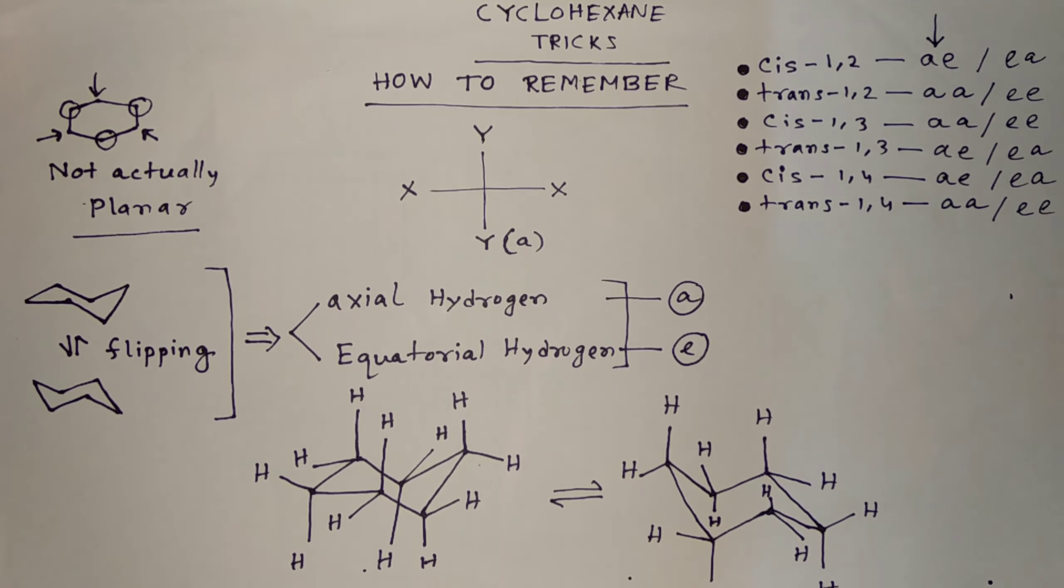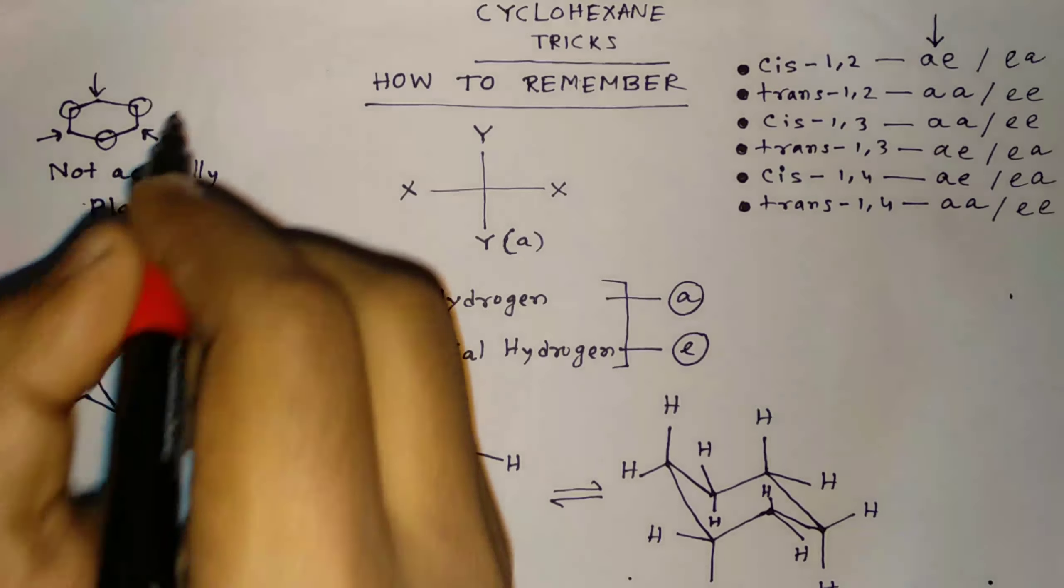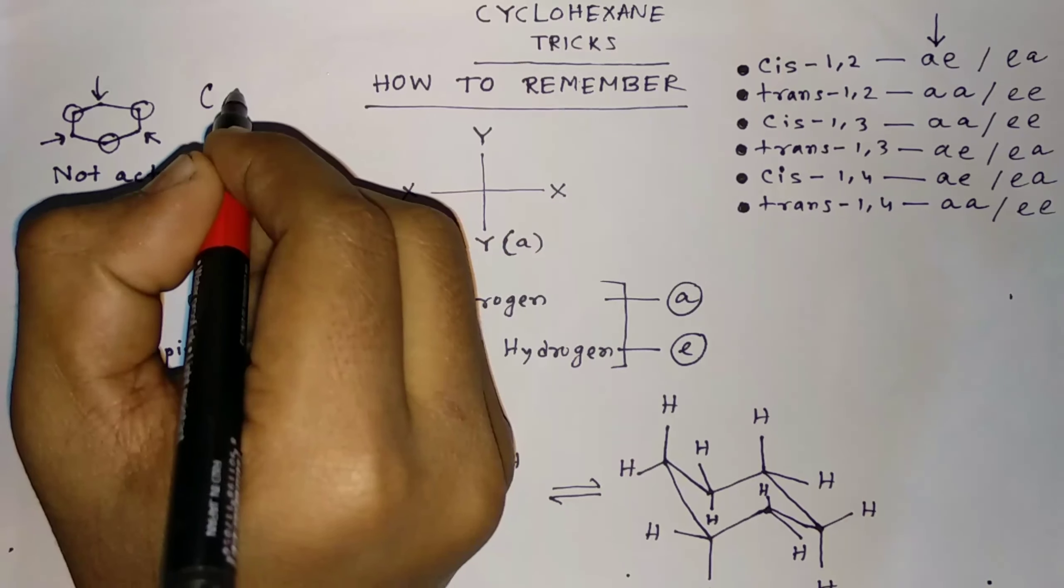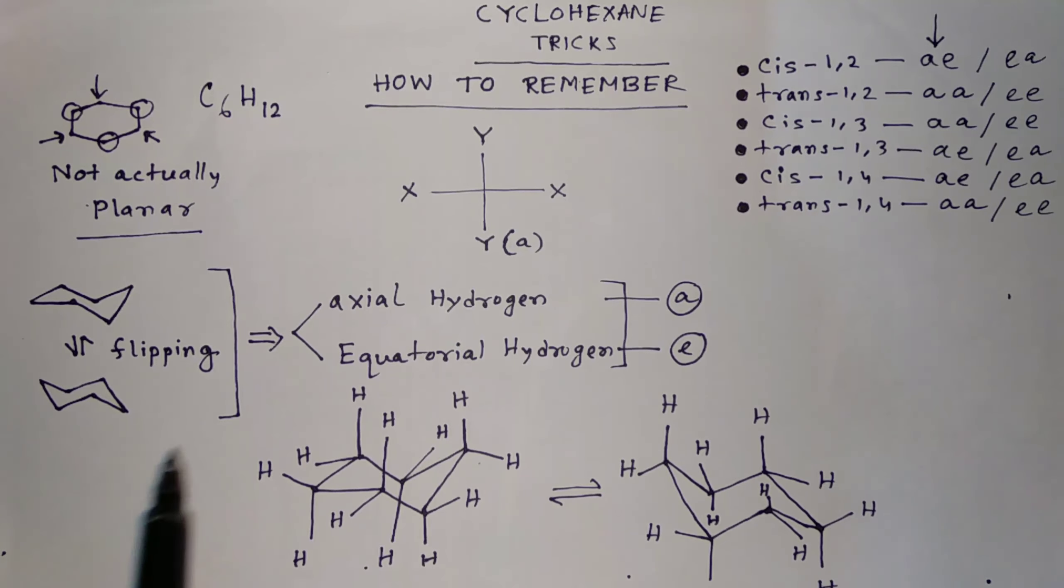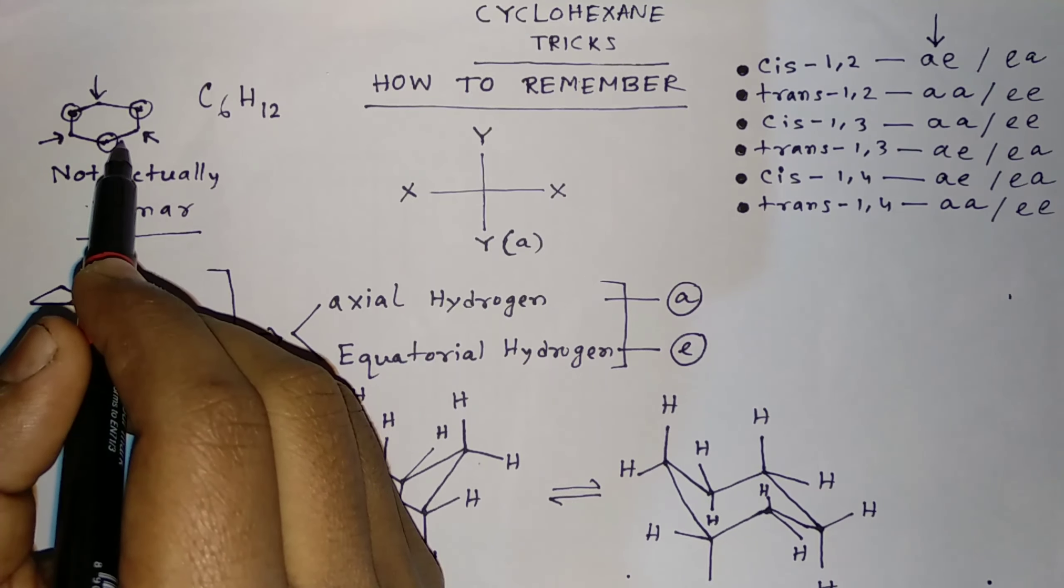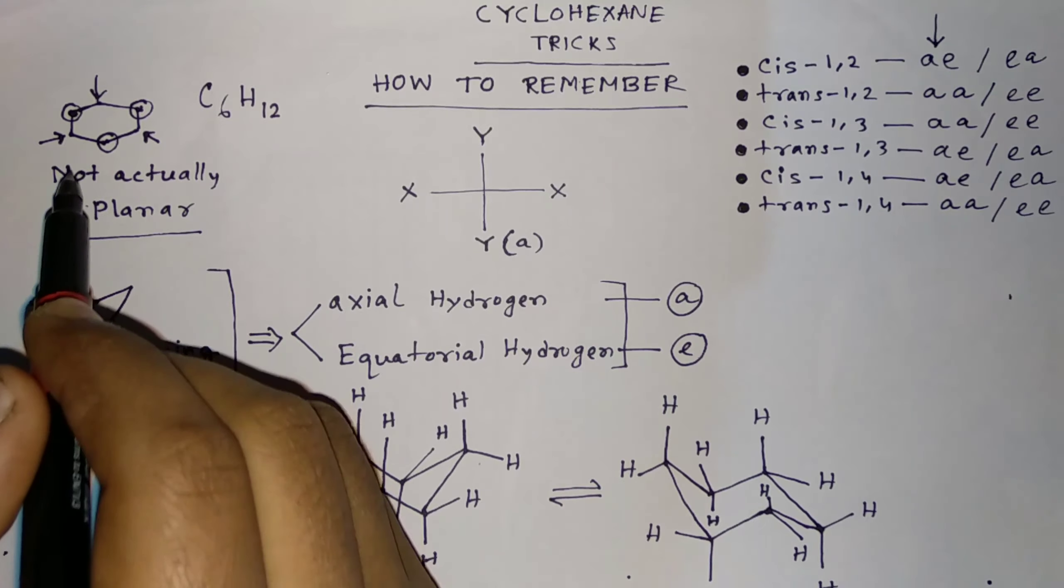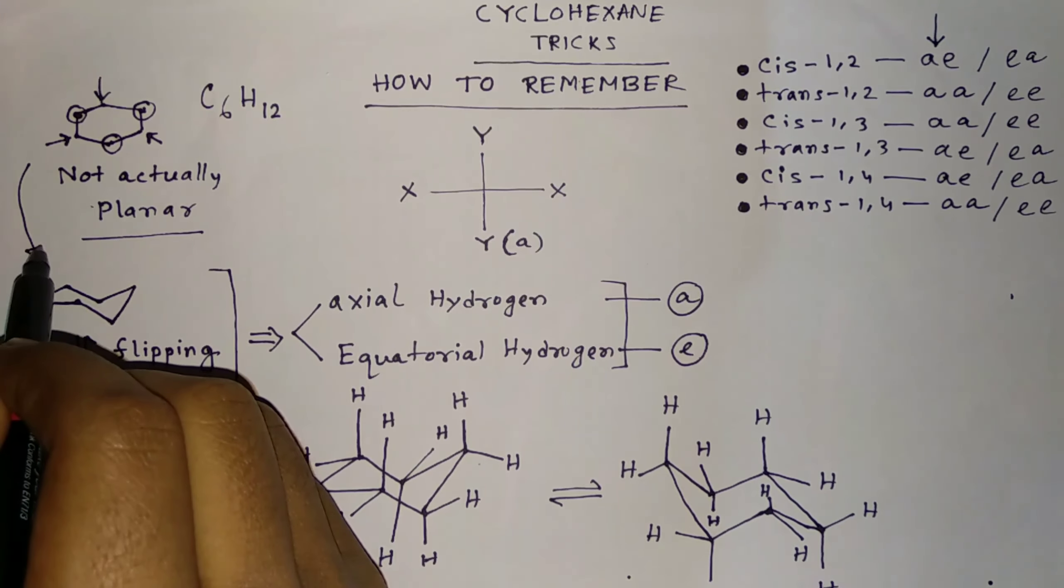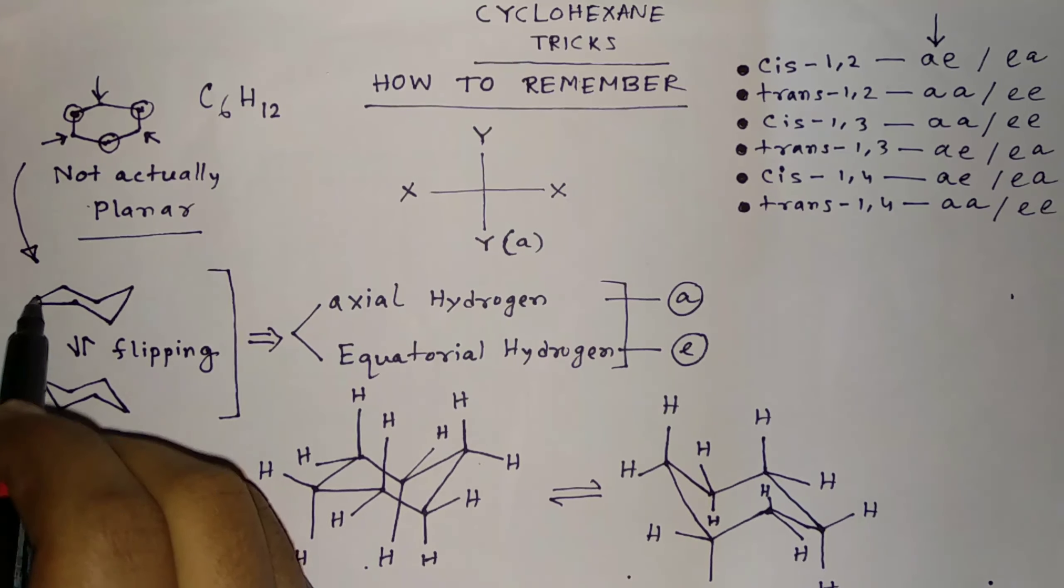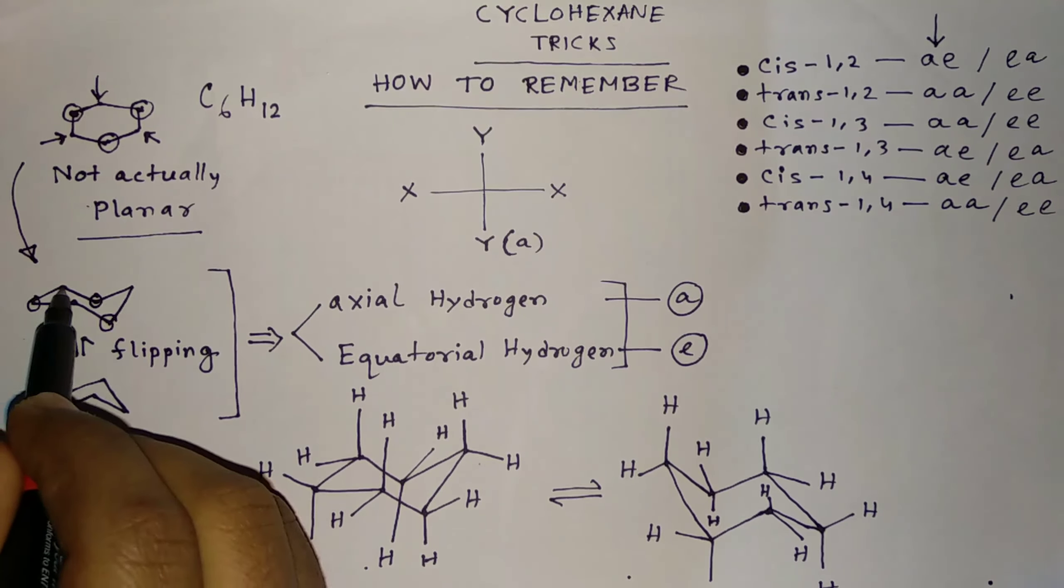However, let's start. So what is cyclohexane? Cyclohexane is six-membered ring, its formula is C6H12 and it looks like a planar but actually it's not.